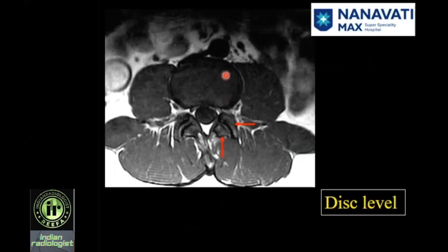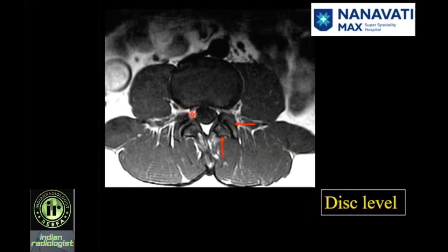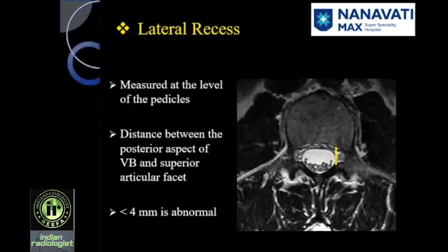Again at L4-5, we have the transverse process, annulus fibrosus which is dark, the thecal sac, superior articular facet of L5, inferior articular facet of L4, ligamentum flavum, and the facet joint. This is the posterior epidural fat. This is the neural foramen. The L4 nerve root is exiting, and this is the L4 nerve root which is traversing. This is the aorta, and this is the crus of the diaphragm.